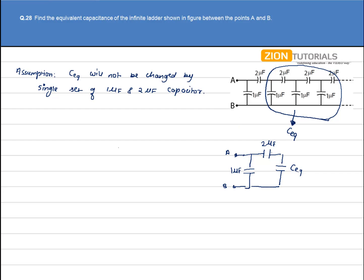So we have 2 microfarad plus C equivalent in series. So let's say C prime is the net capacitance of this circuit. So we get 2C divided by C plus 2.